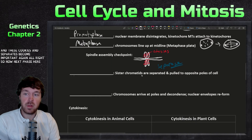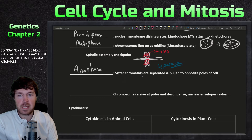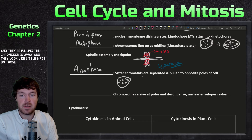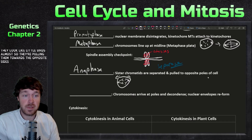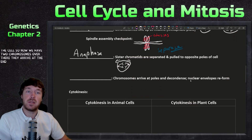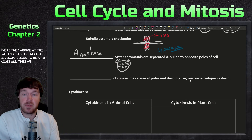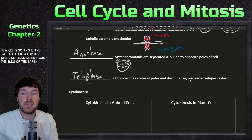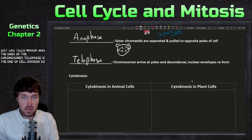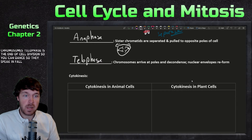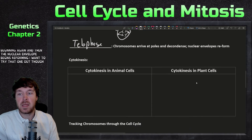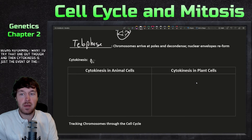Anaphase is when the sister chromatids are pulled away toward opposite poles of the cell — it's the easiest stage to spot under a microscope, as the chromosomes look like little birds being pulled outward. In telophase — named like telomere for 'end' — the chromosomes arrive at the poles, begin to decondense, gene expression starts again, and the nuclear envelope begins to reform. Cytokinesis then divides the cytoplasm.